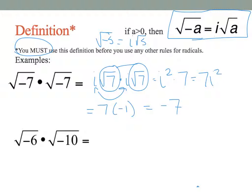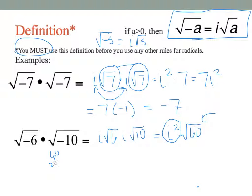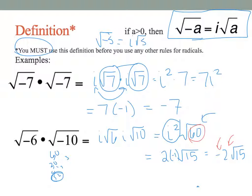For the next one, same thing: square root of negative 6 becomes i times square root of 6; square root of negative 10 becomes i times square root of 10. Multiply the i's together to get i squared, and multiply 6 and 10 to get square root of 60. Doing a factor tree for 60: it factors into 4 times 15, giving a 2 out front. So combining with the negative 1 from i squared, the final answer is negative 2 times the square root of 15.